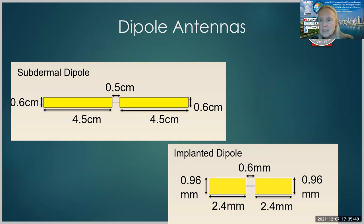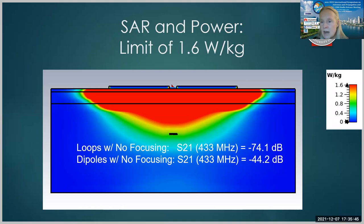So this is what happens with the SAR in this case. Notice that we've got a dipole antenna above and a dipole antenna below. And we end up with a very uniform SAR pattern actually here. So when we considered loops with no focusing, the S21 was minus 74 dB. The dipoles, on the other hand, with no focusing are better at minus 44 decibels. So already we're seeing a better transfer of power from a dipole on the outside to a dipole on the inside.